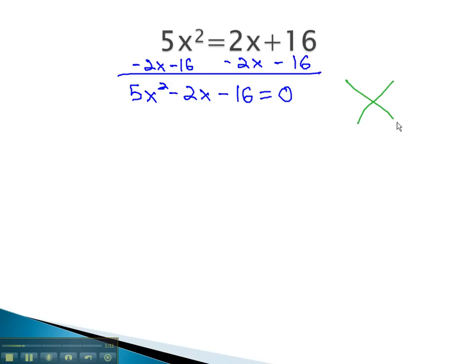We can now factor this using the AC method. 5 times negative 16 is negative 80, and adding to negative 2. We can do this with 10 and 8 if the 10 is negative.